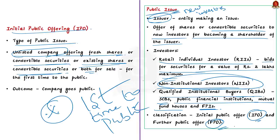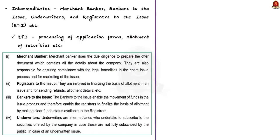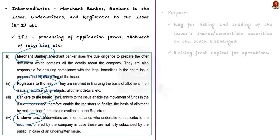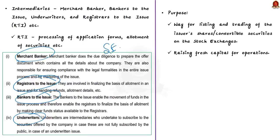Through the IPO, the company goes public. This entire process involves various intermediaries like merchant bankers, bankers to the issue, underwriters and registrars to the issue. All these intermediaries are registered with SEBI and are required to abide by prescribed norms to protect investors. In particular, the registrar to the issue, or RTI, handles the operation of the public issue on behalf of the issuer, like processing of application forms and allotment of securities.